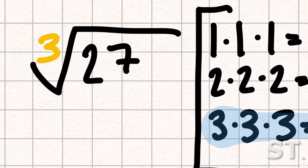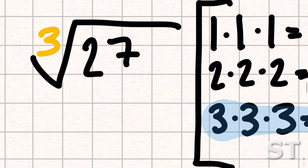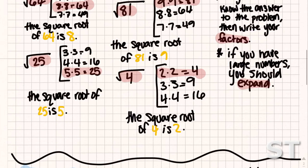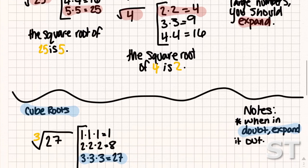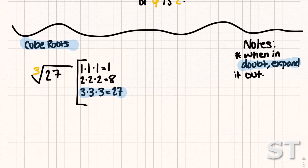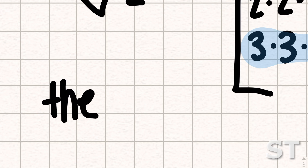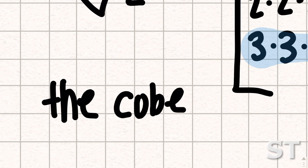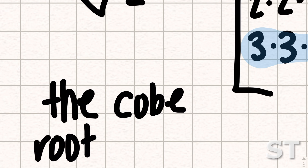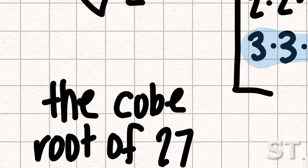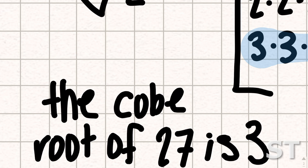So we know the answer to this. The cube root of 27 is 3.